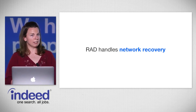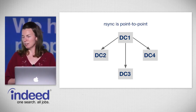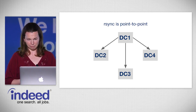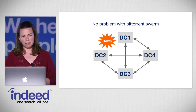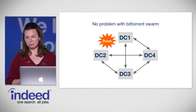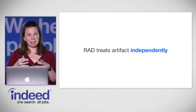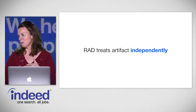RAD also handles network recovery much better than rsync. With rsync, each data center had only one primary data center serving its data, so a link going down required manual reconfiguration. With BitTorrent's swarm model, every data center is already talking to every other data center — if a single link goes down, that data center already has information provided from multiple other sources. RAD also treats each artifact independently, so the delta downloads all subscribed artifacts in parallel, preventing a large artifact from blocking smaller ones.